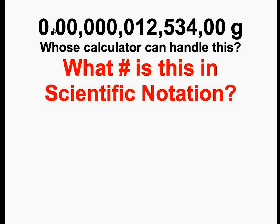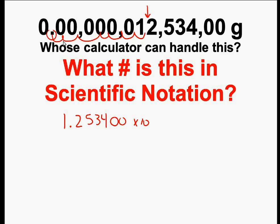Scientific notation always takes the decimal point and moves it between the first two real numbers. Let's move it — it goes 1, 2, 3, 4, 5, 6, 7. So I'm moving this decimal point seven places. My number is going to be 1.253400 times 10 to the — let's count that again — 1, 2, 3, 4, 5, 6, 7 — times 10 to the negative seven. I have a negative right there. Negative simply means my number is small. This is a decimal, a very small number. When my exponent is negative, it's when I deal with numbers like 0.001 where I have leading zeros. Small numbers simply mean negative exponents — that's all it means.